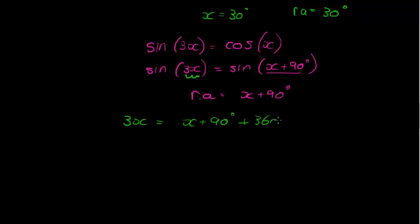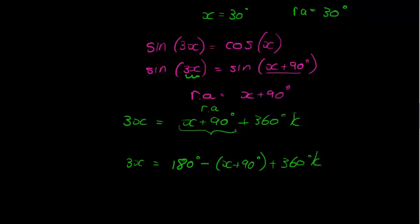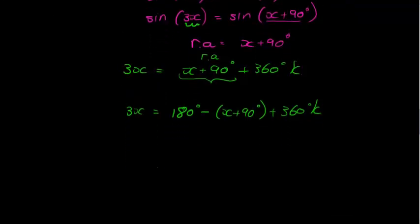Plus 360 degrees times k. In other words I just took my reference angle. Or 3x is equal to, and now I take my 180 degrees minus because I'm working with sine, this is the other one, minus my reference angle which is minus x plus 90 degrees plus 360 degrees times k. Those are my two solutions.